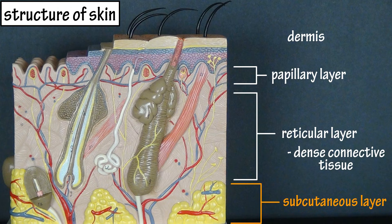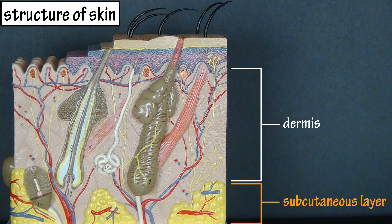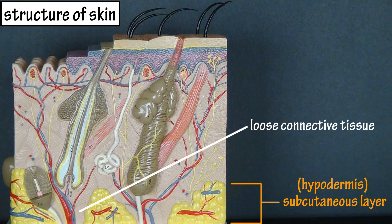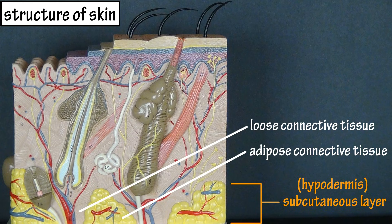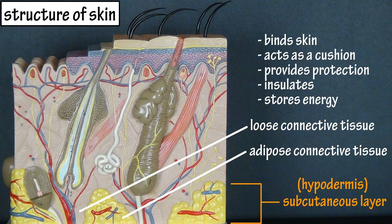The subcutaneous layer, which again is not part of the skin, is located below or deep to the dermal layer of the skin. This layer is often referred to as the hypodermis, and it consists of loose connective tissue and adipose connective tissue, or fat tissue. Many times it is referred to as subcutaneous fat. This layer helps bind the skin to underlying structures, acts as a cushion, protects the body, provides insulation, and provides for energy storage. And that covers the basics on the structure of the skin.